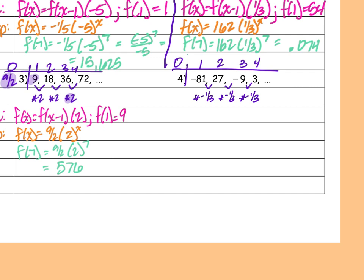Then I need my zeroth term. Going backwards from negative 81: negative 81 times 3 — wait, going backwards I multiply by negative 3, so I get 243. And it's positive. So my zeroth term is 243. I have my zeroth term, first term, and common ratio — everything needed.